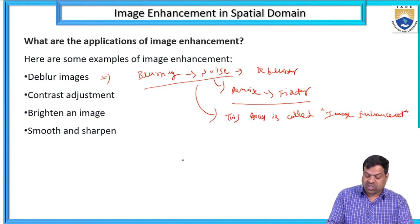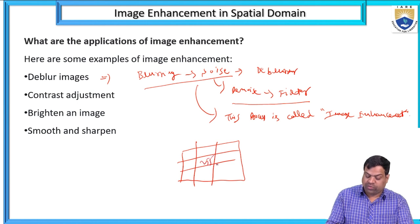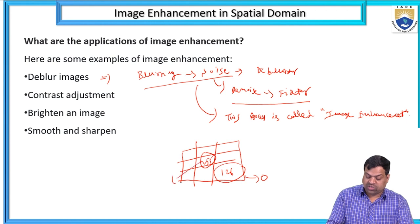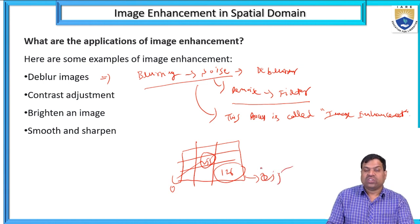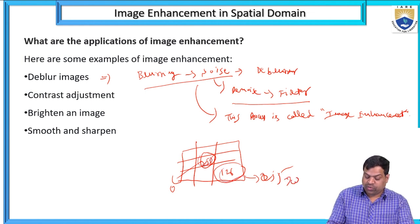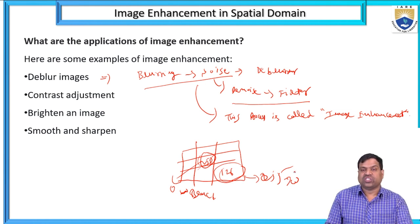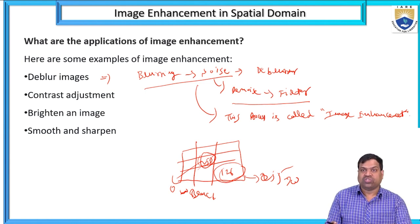Contrast adjustment means pixel intensities are changed. For example, if a pixel has value 255 and is reduced to 0, or a pixel with value 126 is changed to 255 — converting pixels between black and white. This process of adjusting pixel intensities is called image enhancement.